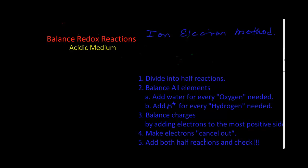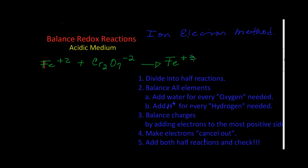Let's pick a reaction containing ferrous ions. We have iron plus two reacting with an oxidizing agent like potassium dichromate. In this reaction, iron plus two produces iron plus three, and the dichromate ion ends as chromium plus three. As we see, this reaction is not balanced.